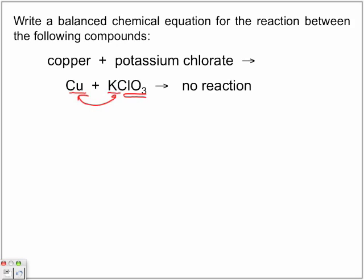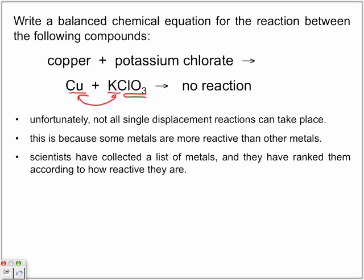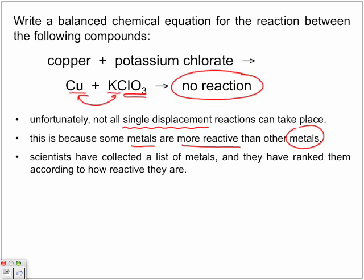We're not just guessing, and we're not going to have to memorize that this one doesn't react. We use a special category of compounds to determine this. Not all single displacement reactions take place — this is because some metals are considered more reactive than other metals. Between two metals, a big difference in reactivity means one may be reluctant to give up the compound it's bonded with. Scientists have collected and ranked metals according to how reactive they are.